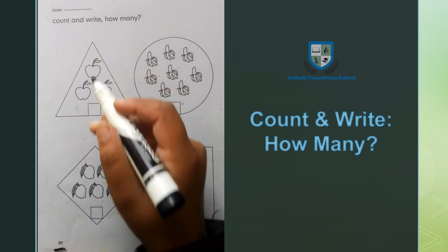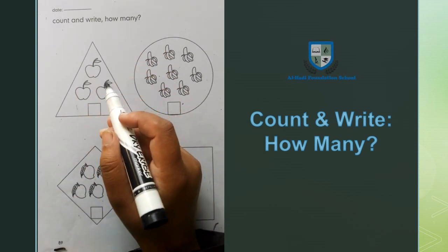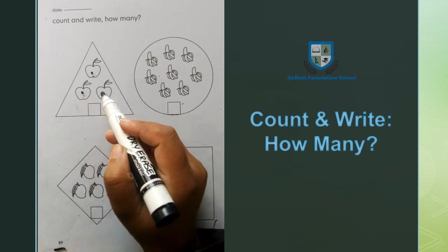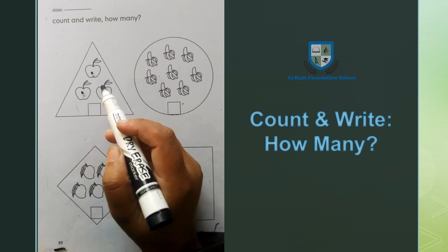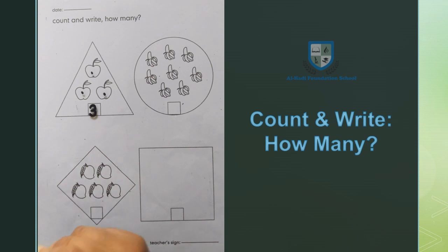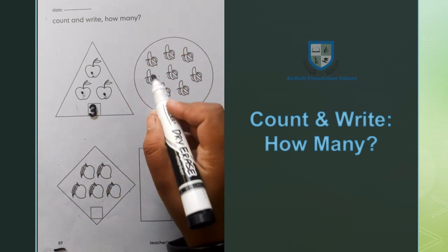We will write the shape of the triangle. Now the triangle has apples. We will count these apples: 1, 2, 3 apples. We will write 3 in the block. Next shape is the circle.